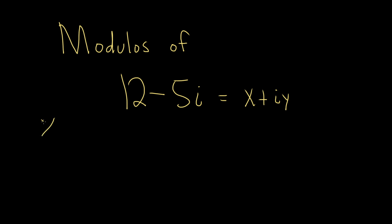So the x in this problem is going to be 12, and the y has to be negative 5. And so the modulus of a complex number is r equals the square root of x squared plus y squared.